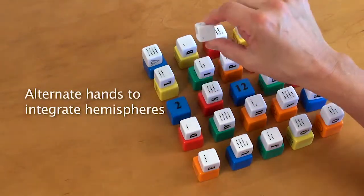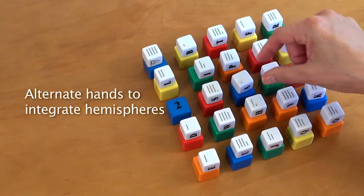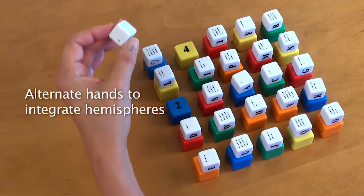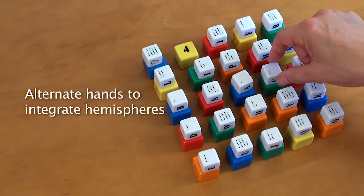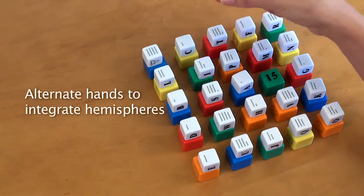As usual, you would move the dice in sequence, alternating your left and right hands in order to integrate both sides of your brain. So that's the second one, and then the third one.